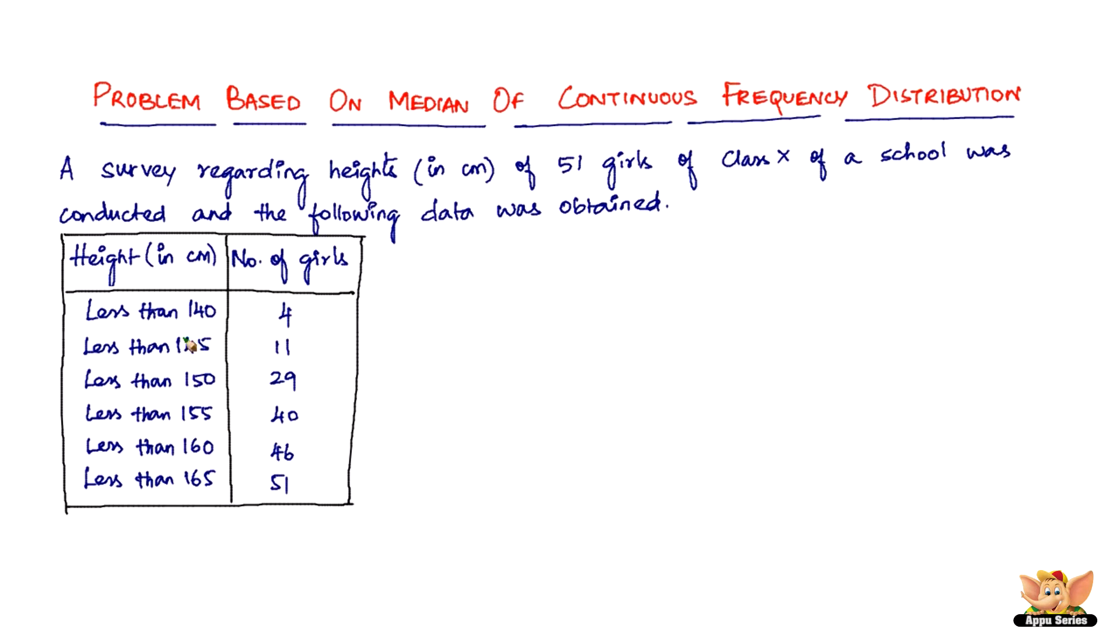It says less than 140, that means these four girls are only less than 140 and they're not equal to 140. So what we have to do is we need to group them in a different way.